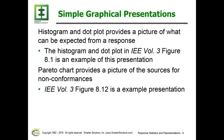Histograms and dot plots provide a picture of what can be expected, showing not only the average value but also the variation of a situation from which we are sampling. A histogram groups data points together, whereas a dot plot shows the actual values. Dot plots are more beneficial with small amounts of data, while histograms are better for large amounts of data.